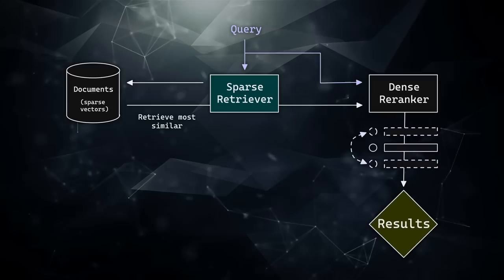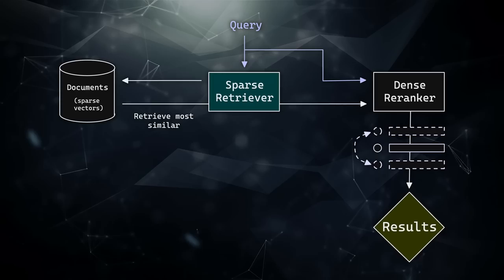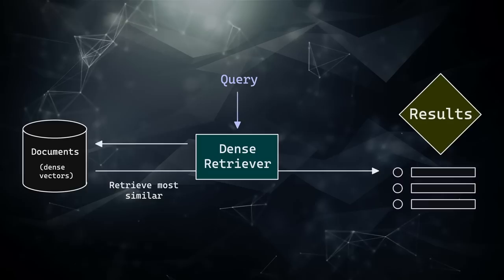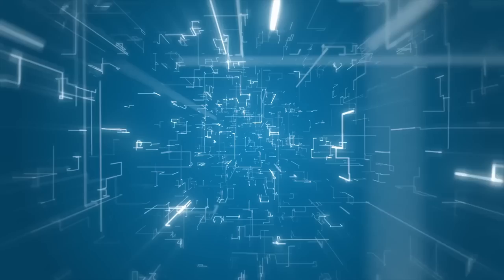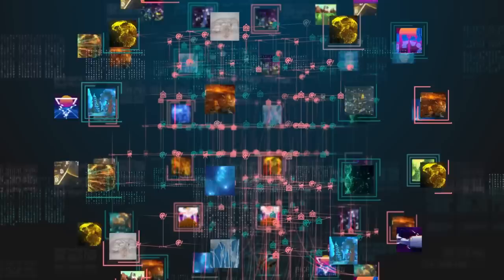However, two-stage retrieval is not perfect. Two stages of retrieval and re-ranking can be slower than a single-stage system using approximate nearest neighbor search. Having two stages is also more complicated, with many engineering challenges. Most critically, we are very reliant on that first-stage retriever — if it returns poor results, the second-stage re-ranker can only re-rank those poor results, and the final output will still be poor.